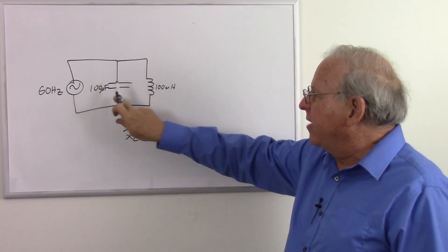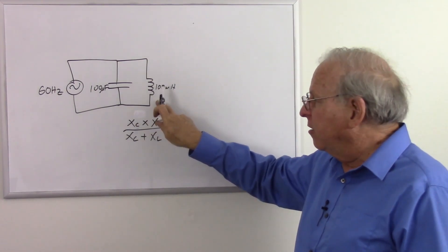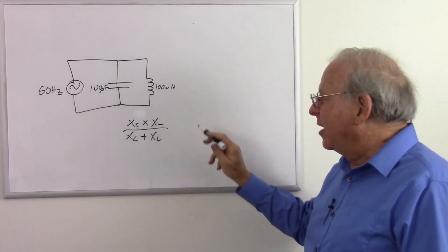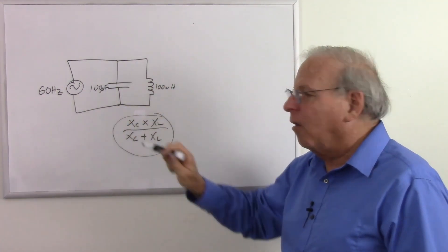Knowing a couple of tricks about how imaginary numbers work, we were able to take the capacitive reactance and the inductive reactance, we calculated those, plugged those in, and just decided which way the sign went, and we got a quick answer without having to go through all the complex numbers.